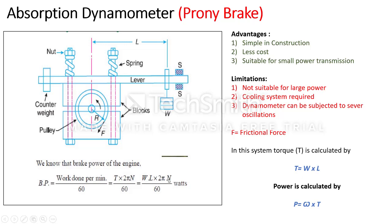Then we note the rotation N, which can be in RPS or RPM. Using the power formula: power = ω × T, where ω = 2πN/60 (when N is in RPM), giving brake power = 2πNT/60. When N is in RPS, the formula becomes brake power = 2πNT. This is the difference between the formulas depending on whether N is in RPS or RPM. You can remember either formula; work done per minute divided by 60 gives brake power = 2πNT/60.